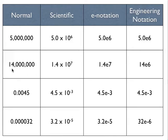With normal notation, fourteen million is written as fourteen comma three zeros comma three more zeros. Scientifically it's one point four times ten to the seventh because we had to move our decimal point over seven places. With e notation we just write as one point four e to the seventh.